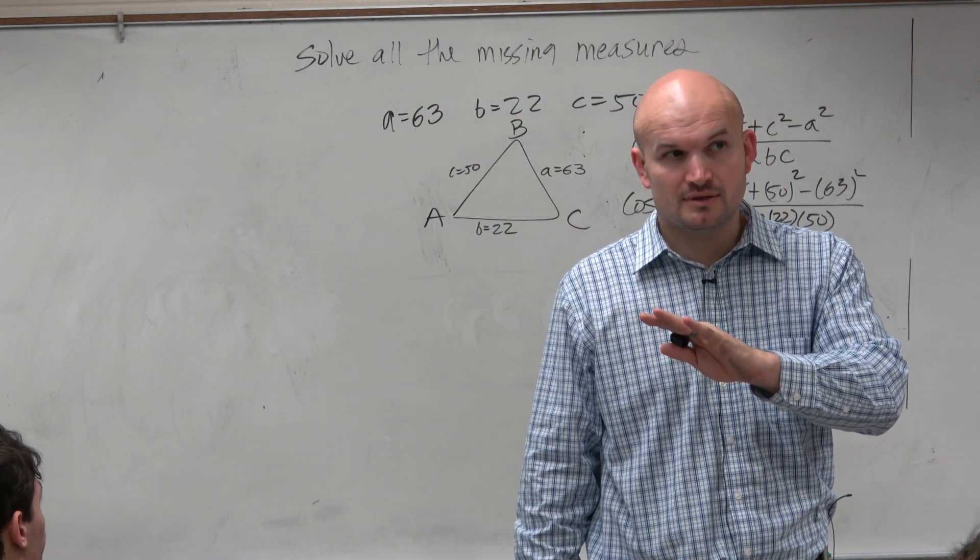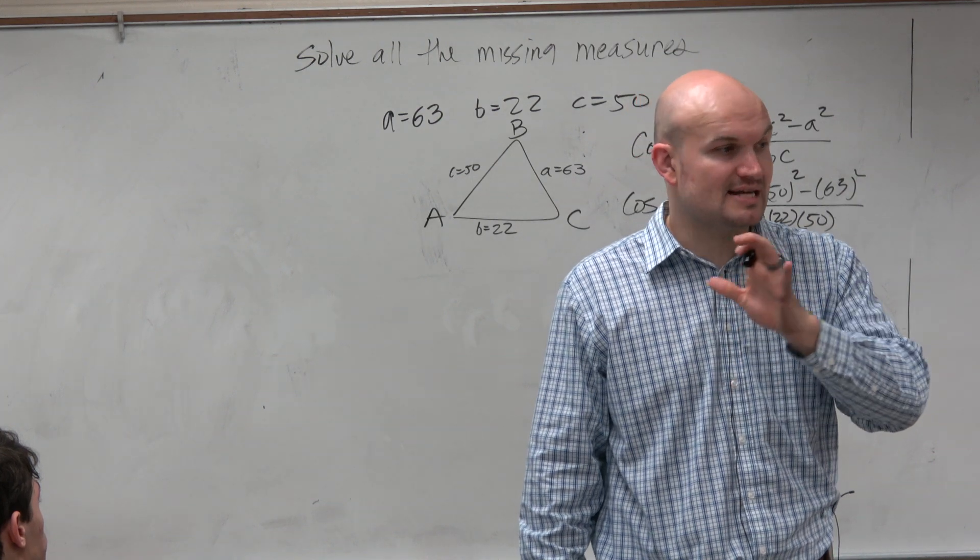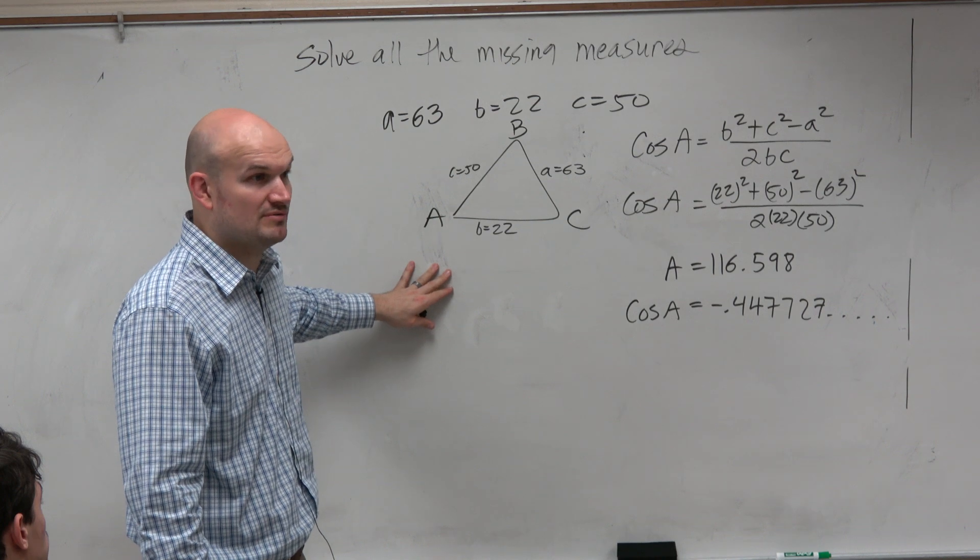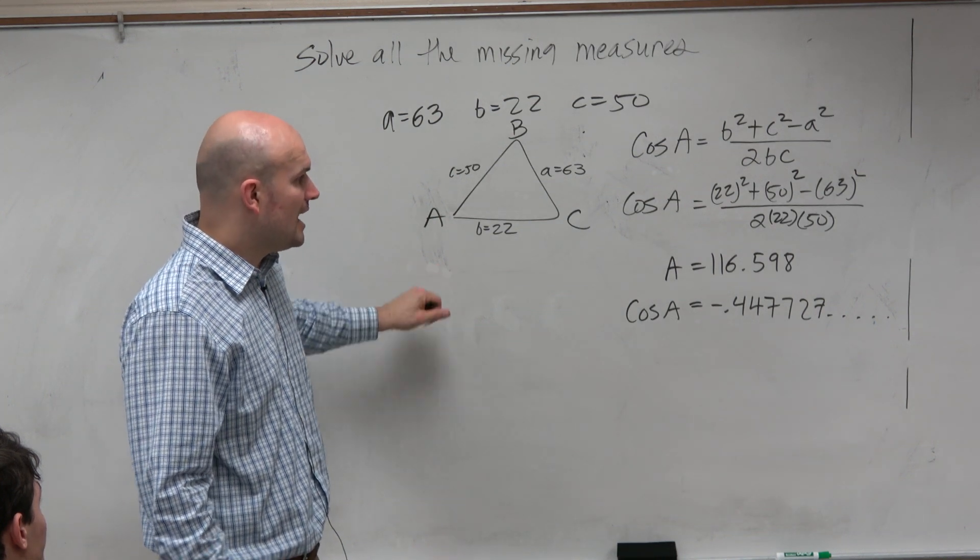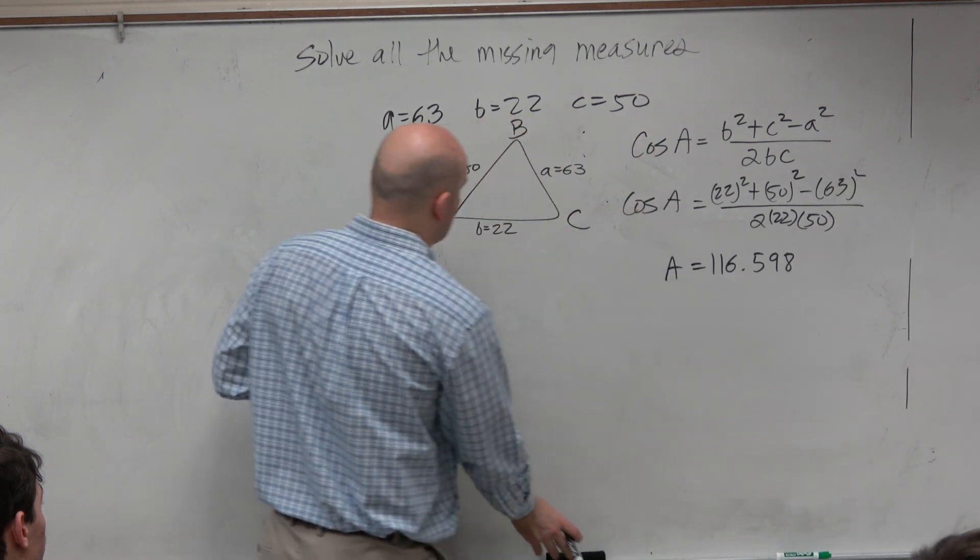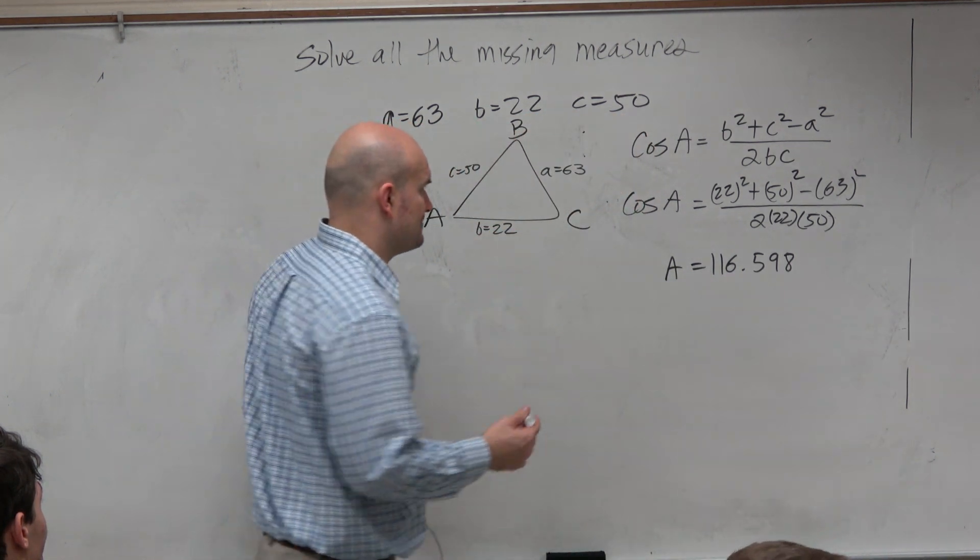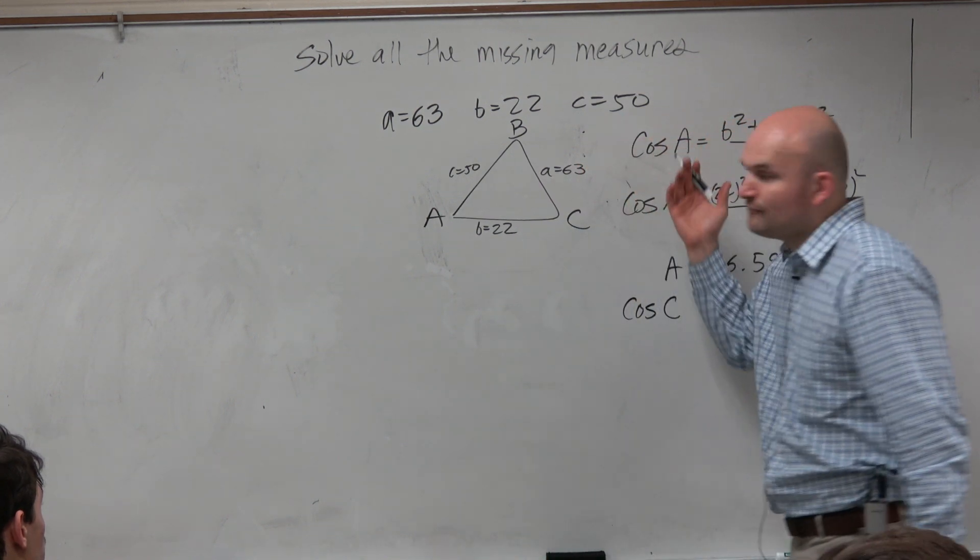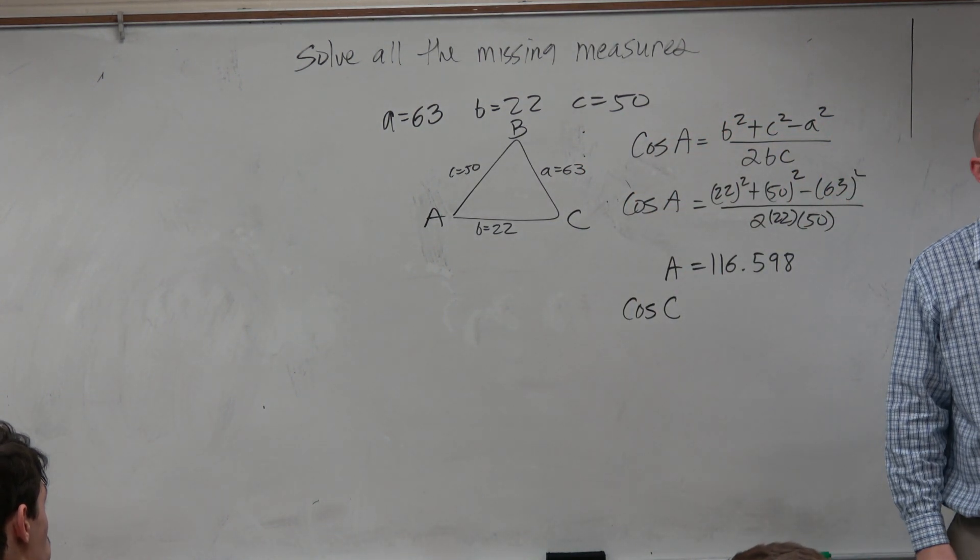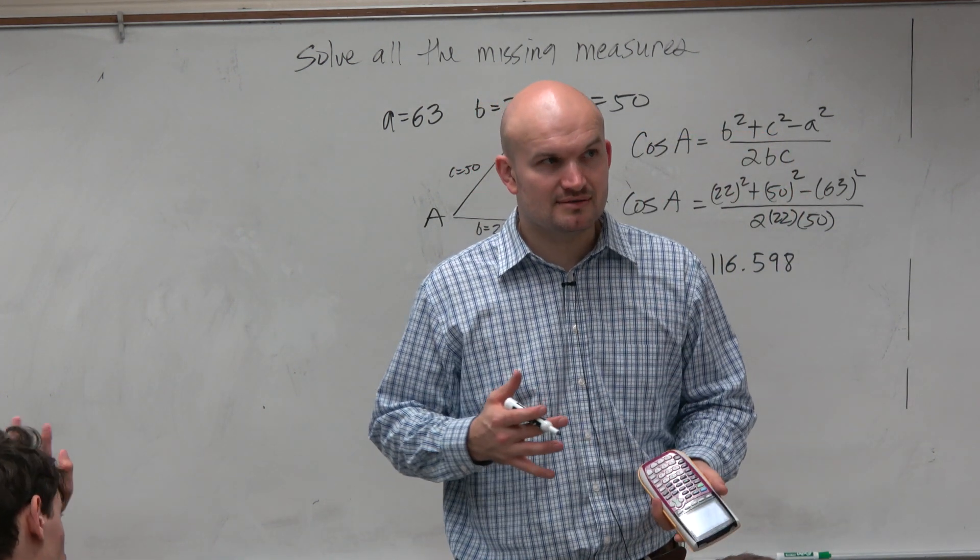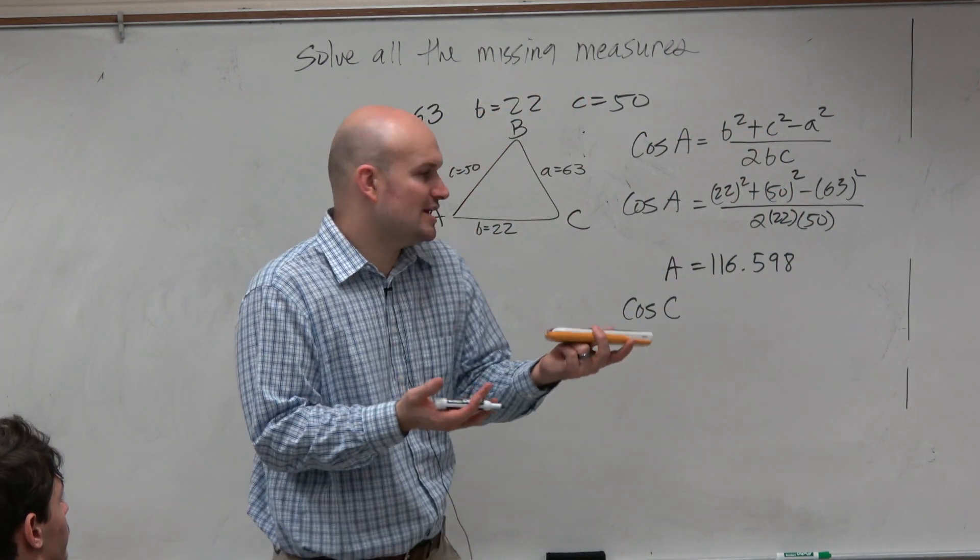But again, now what I'd like to do is, as I kind of finish this up, what I'd like you guys to go and do is, we need to still figure out the rest of the measures, the rest of the remaining measures. Now, how are we going to figure out what is cosine of C or B? Let's just go ahead and decide on C. So how would I figure out what cosine of C is? I only have a formula for cosine of A. Is there anything wrong with me just swapping the variables around?